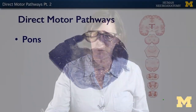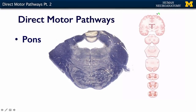In this segment, we'll take up those fibers that are traveling from the primary motor cortex through the internal capsule, through the crus cerebri of the midbrain, and now they're in the pons. In the pons, these motor fibers are no longer a solid structure — they're running in between a bunch of gray matter.